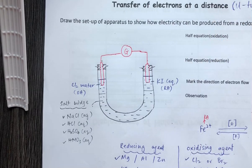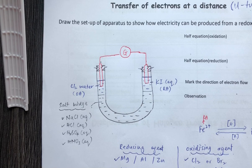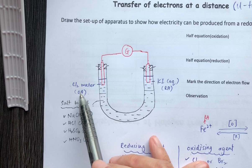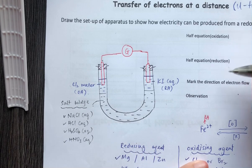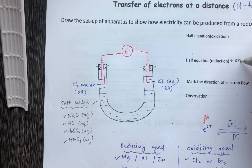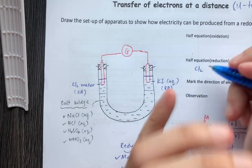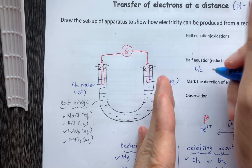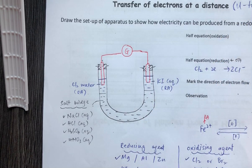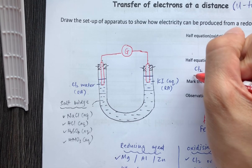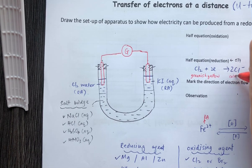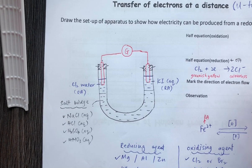Now, what will happen during this reaction? Chlorine water is an oxidizing agent, so it undergoes reduction. The half-equation for chlorine is: Cl2 + 2e⁻ → 2Cl⁻. The observation on the chlorine side is that the greenish-yellow solution turns colorless.